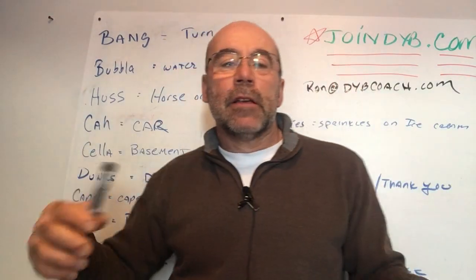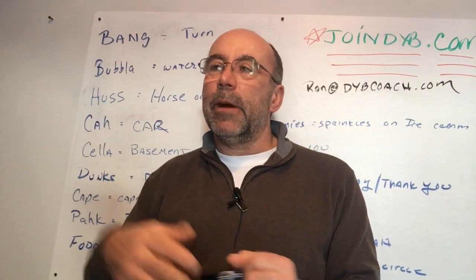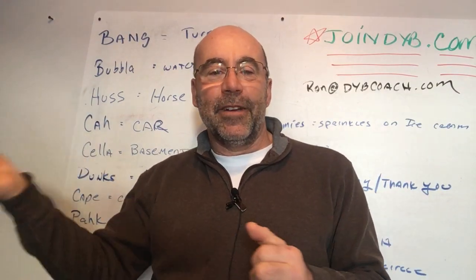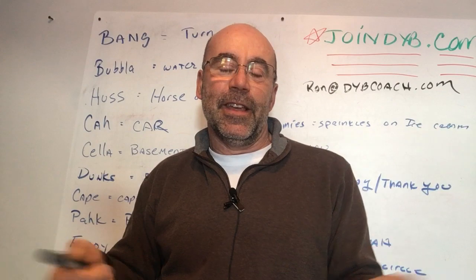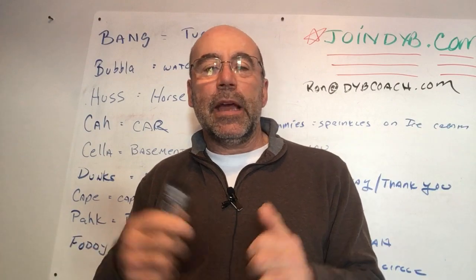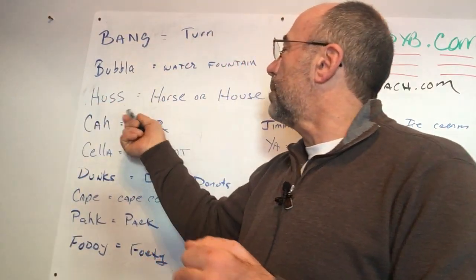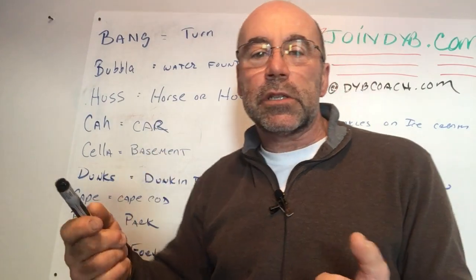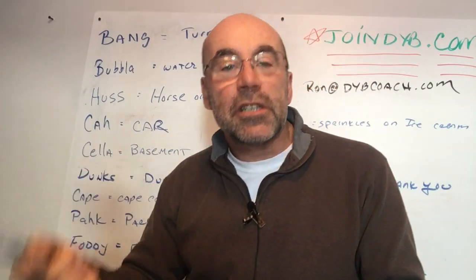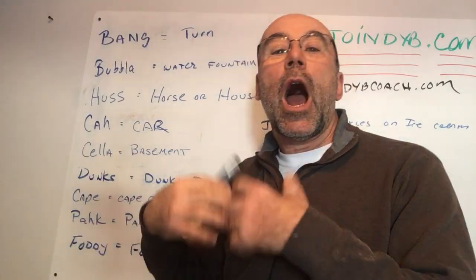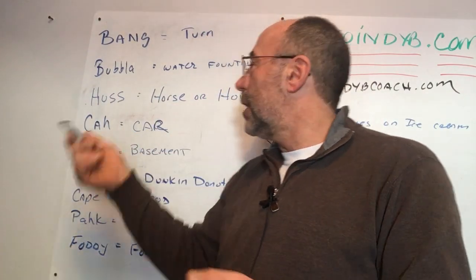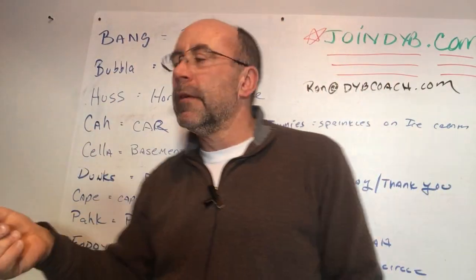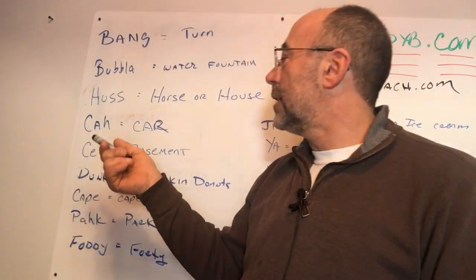A huss. So, you're driving down the street and you might see a couple of husses, a huss over here, a huss over there. It can mean two things. A huss, depending on the wordage you're going to use, it's either a horse or a house. It's a huss. A couple of husses, a blue house, a white huss.